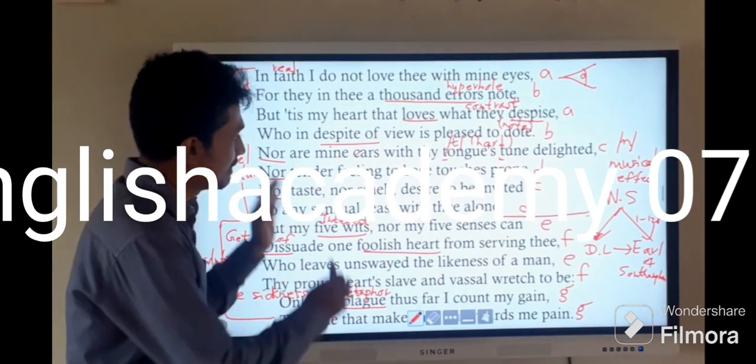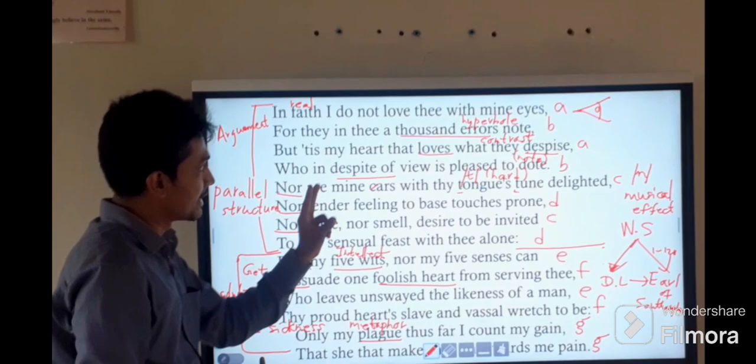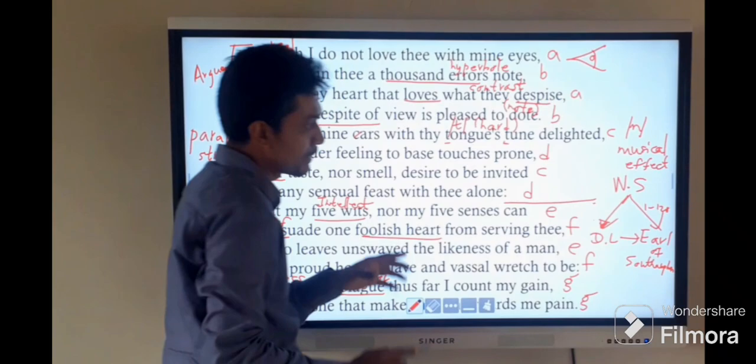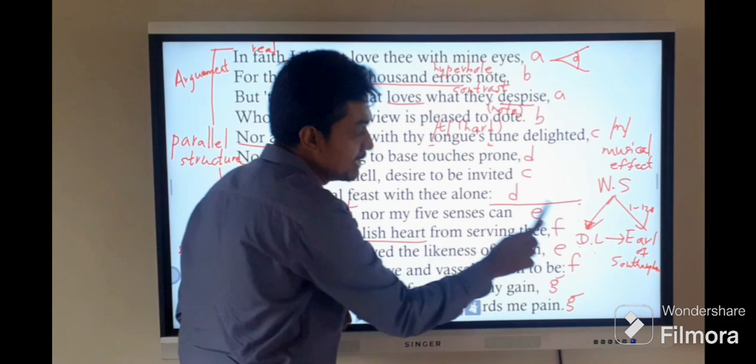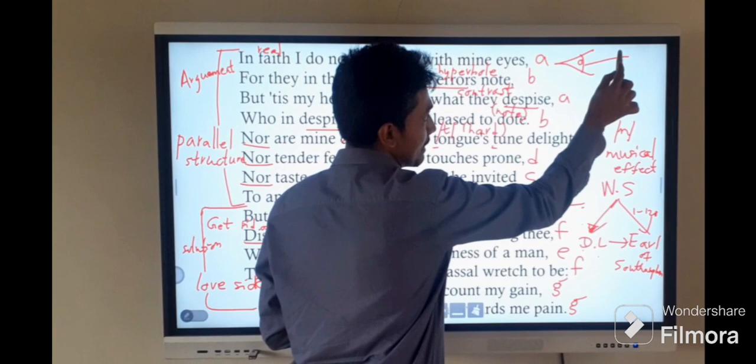Today we are going to learn one poem from A-level literature syllabus, that is Sonnet No. 141, written by William Shakespeare. In this poem, William Shakespeare is addressing two dark ladies, so we are going to see a contrasting situation, that is the appearance and the reality.